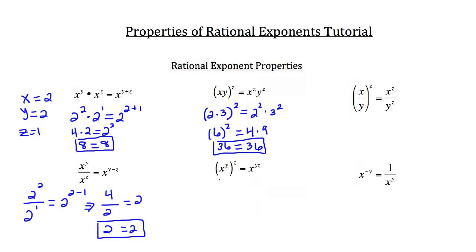Looking below: x to the y power, also raised to the z, is equal to x raised to the y times z. So if x were 2, y were also 2, and z were 3 — putting in arbitrary numbers to test this — on the right side of the equation it should be x, which is 2, raised to y times z, so 2 times 3.